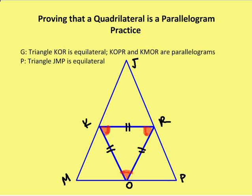So RO is congruent to KM, KR is congruent to MO, KR is congruent to OP, and RP is congruent to KO. Now I have three triangles that are congruent by side-side-side. And I'm going to mark up the angles, because if triangle KOR is congruent to triangles MKO and ORP, then the corresponding angles are congruent as well. So I mark those up.